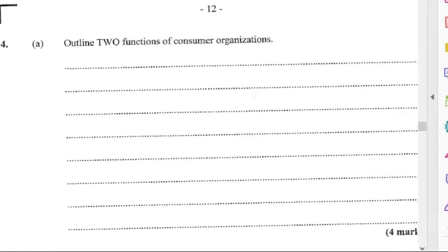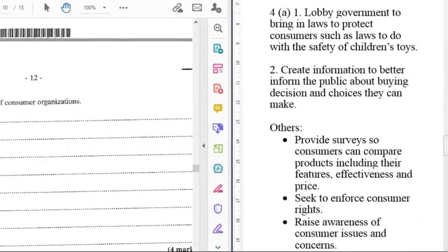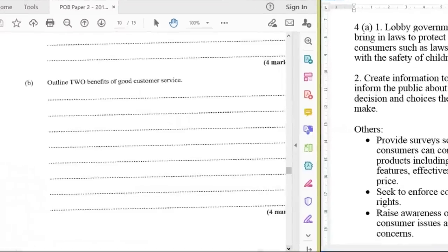Let's look at 4A. Outline two functions of consumer organizations, worth four marks, two marks each. One function is that they lobby government to bring in laws to protect consumers such as laws to do with the safety of children's toys. A second function is that they can create information to better inform the public about buying decisions and choices they can make. Others include provide surveys so that consumers can compare products including their features, effectiveness and price, seek to enforce consumer rights, and raise awareness of consumer issues and concerns.